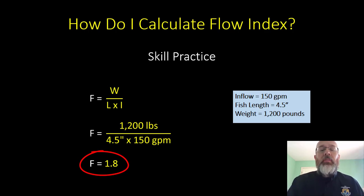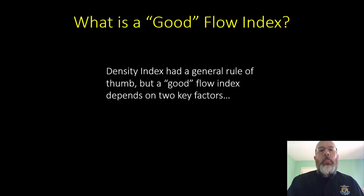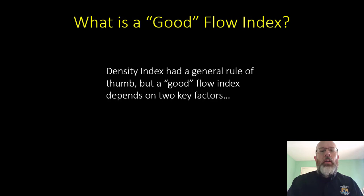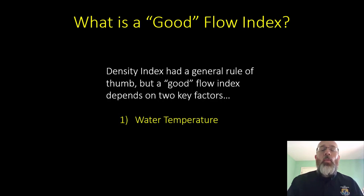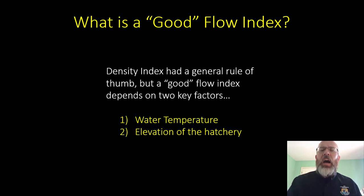So now we know how to calculate flow index — but what does that mean? What is a good flow index? If you remember back to density index, we had a general rule of thumb that we didn't want the density index to go above 0.5. But a good flow index depends on two key factors: water temperature at the hatchery and the elevation of the hatchery. Both water temperature and elevation can affect the amount of dissolved oxygen in the water.